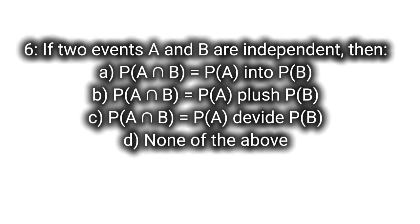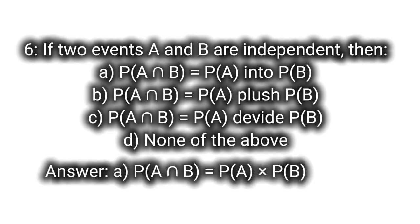Q6: If two events A and B are independent, then A. P(A∩B) equals P(A) times P(B), B. P(A∪B) equals P(A) plus P(B), C. P(A∩B) equals P(A) divided by P(B), D. None of the above. Answer: A. P(A∩B) equals P(A) times P(B).